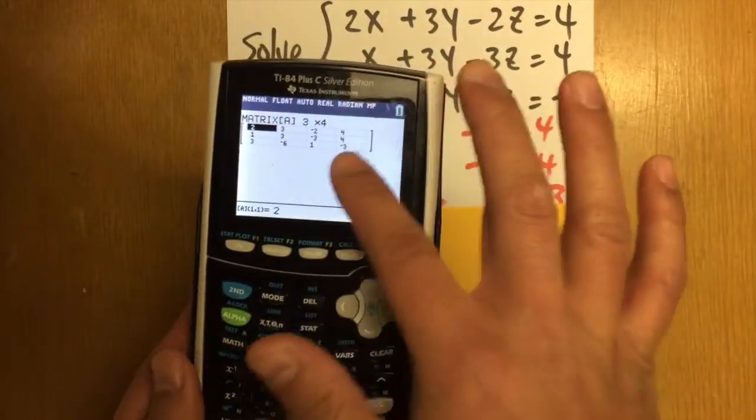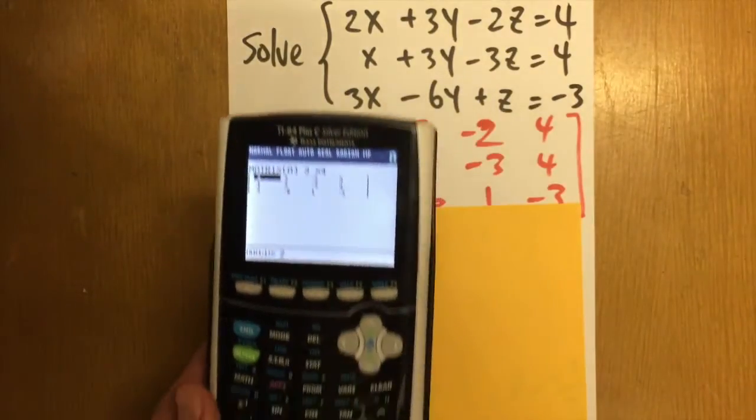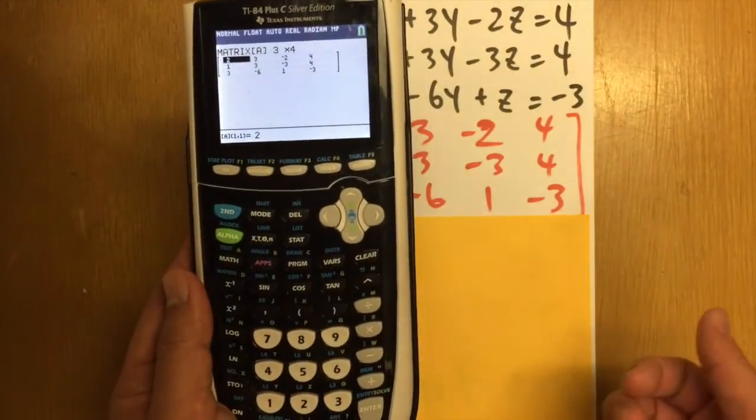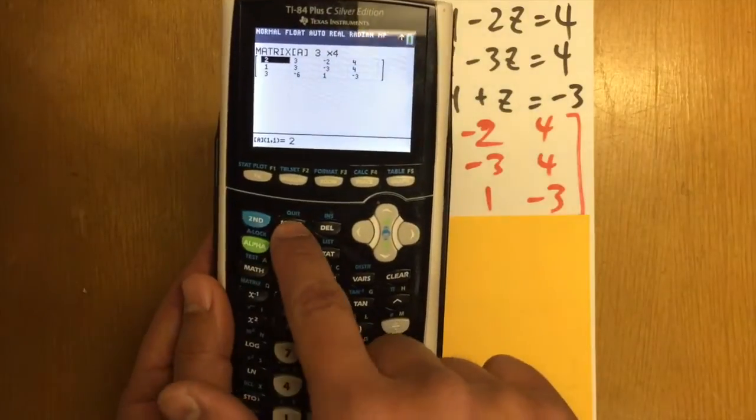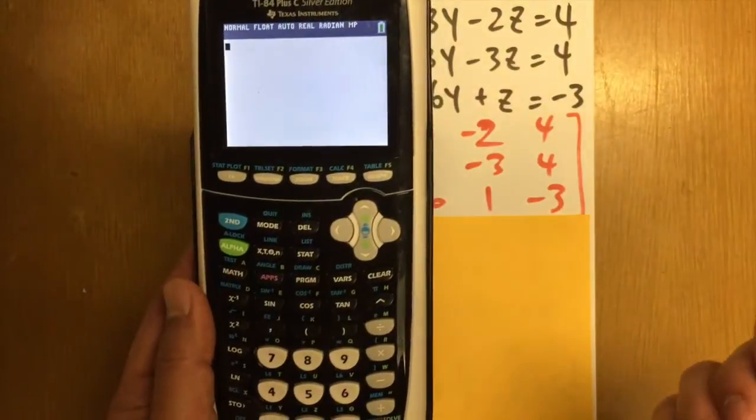So after we fill in the matrix A to be this, this is what we have to do. We have to go back home first. Second, quit. We have to go back to the home page.